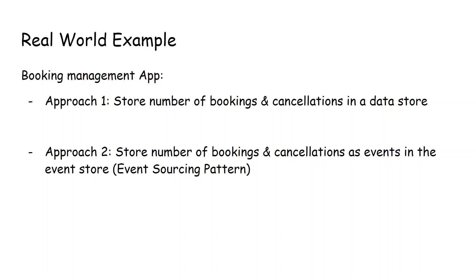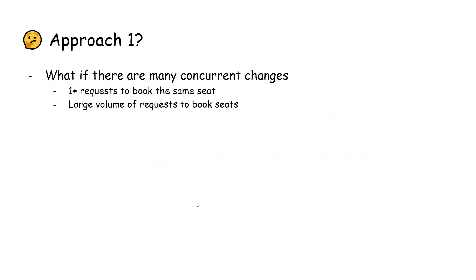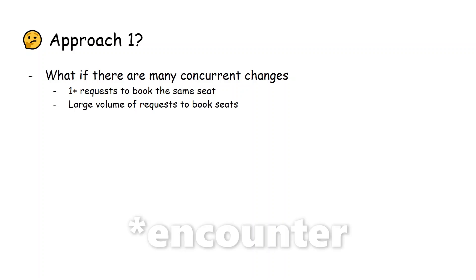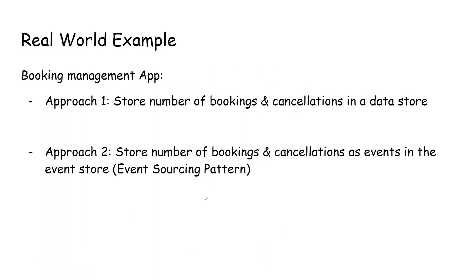If we choose approach one, there are some disadvantages. For example, with many concurrent changes — one or more requests trying to book the same seat, or one person trying to remove a seat while another tries to book concurrently — approach one will cause conflicts. Instead, we could use approach two, which is the event sourcing pattern, to avoid these concurrent conflicts.